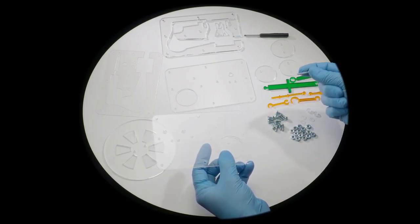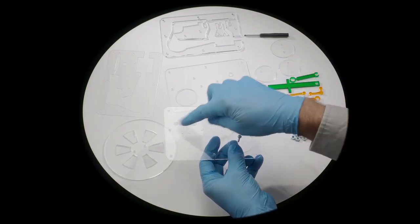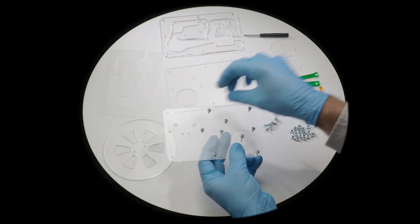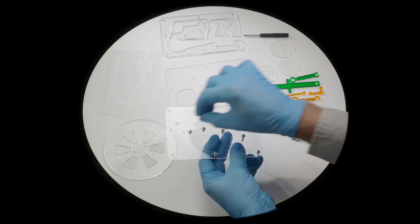And then we take short screws and put them through all the other holes, not the two larger holes, but all the other screw hole sized holes. There's a lot of them.